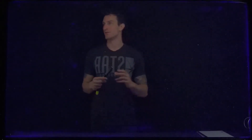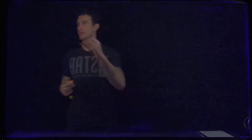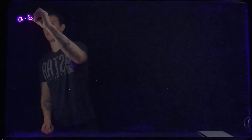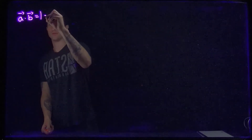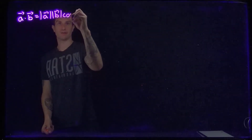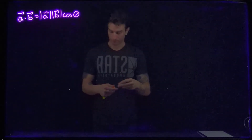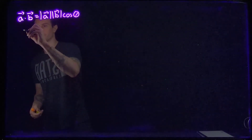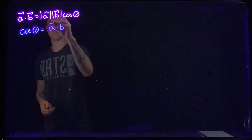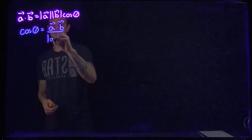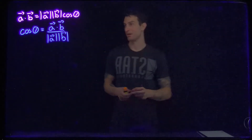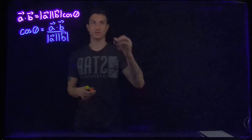Now that we have a way to measure angles between two vectors, let's write out what we have: a dot b equals the magnitude of a times the magnitude of b times cosine of theta. Rearranging: cosine of theta equals a dot b all over the magnitude of a times the magnitude of b. The concept I want to introduce now is what's known as projections.